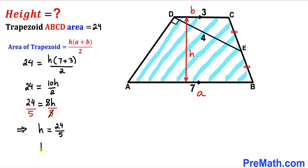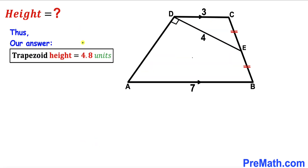The height h turns out to be 4.8 units. After all our manipulations and calculations, the height of trapezoid ABCD is 4.8 units — that's our final answer. Thanks for watching and please don't forget to subscribe to my channel for more exciting videos!